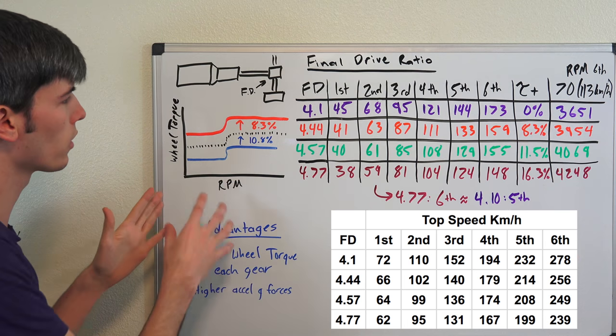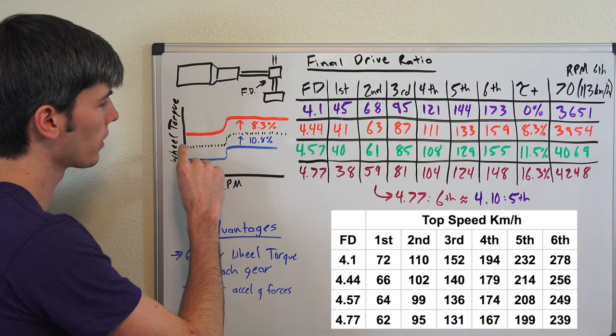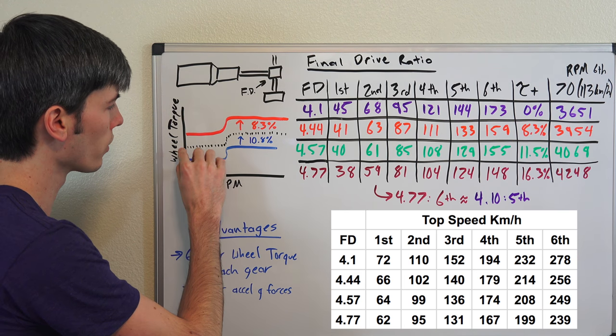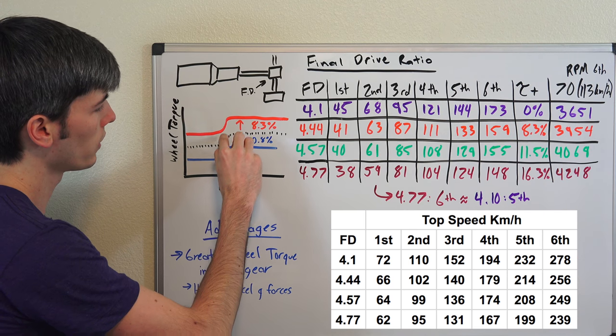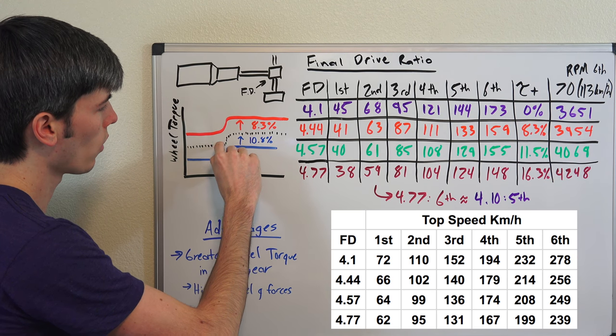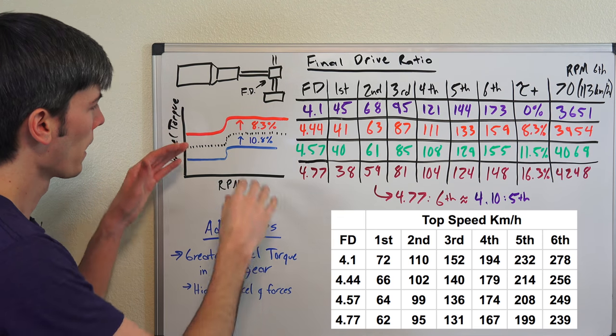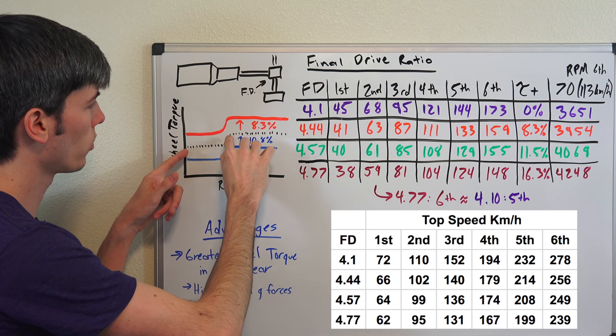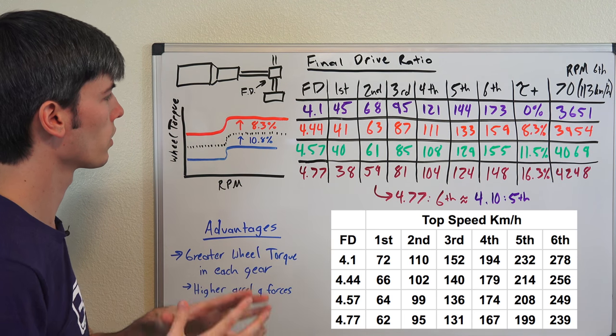And so if you were to look at the wheel torque of the vehicle, basically it's going to follow the curve of the engine. So you can see it's flat, you're going to hit VTEC at some point and then it's going to go up a little bit and remain flat. And this is a similar curve to what the S2000's engine torque curve is going to look like.